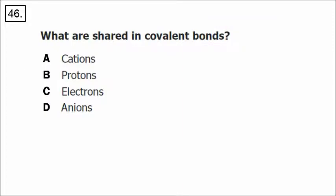Number 46: there are ionic bonds and covalent bonds. No matter what type of bond, electrons are being shared or transferred — electrons are always involved in chemical bonds.